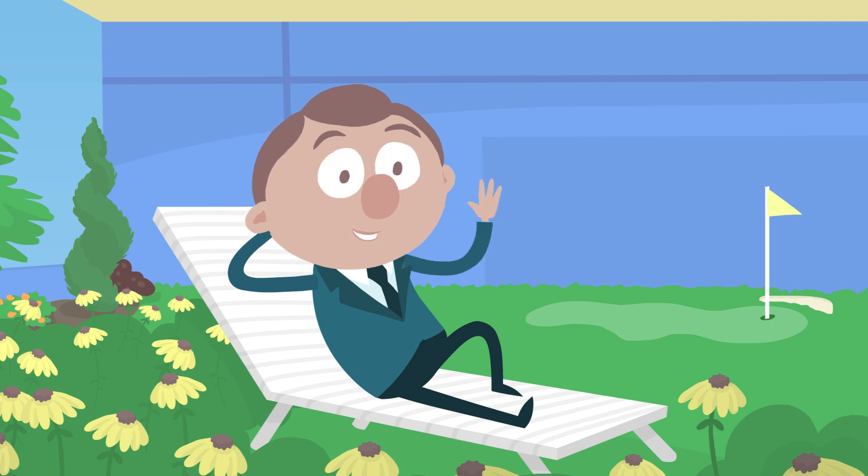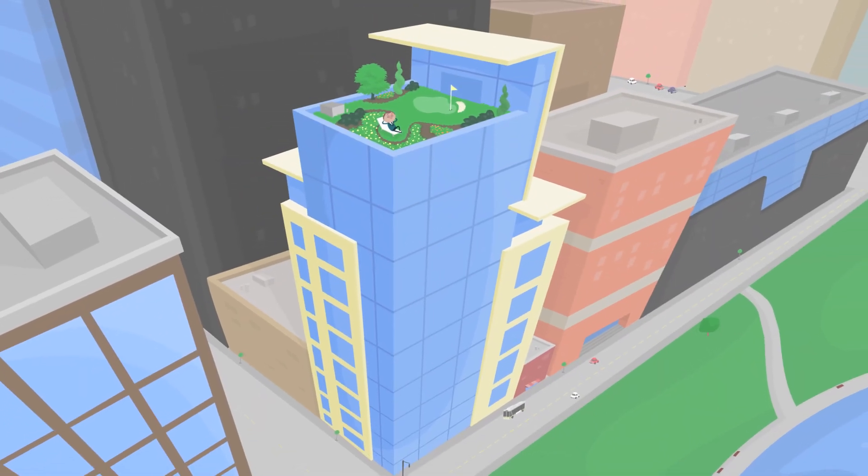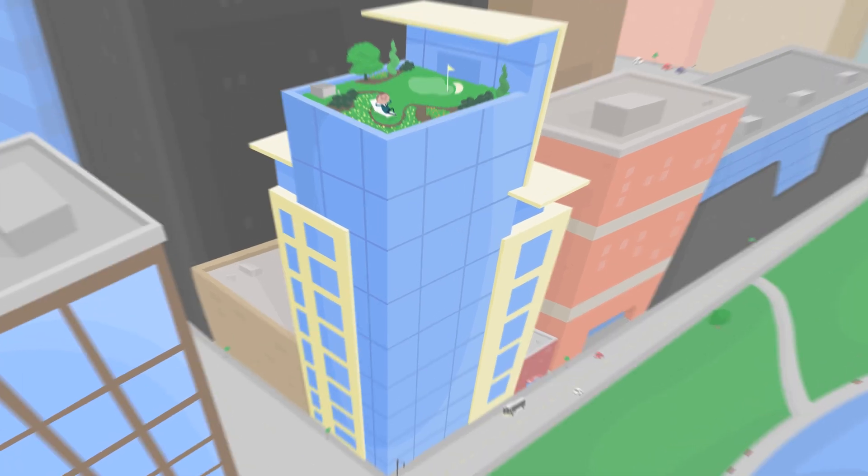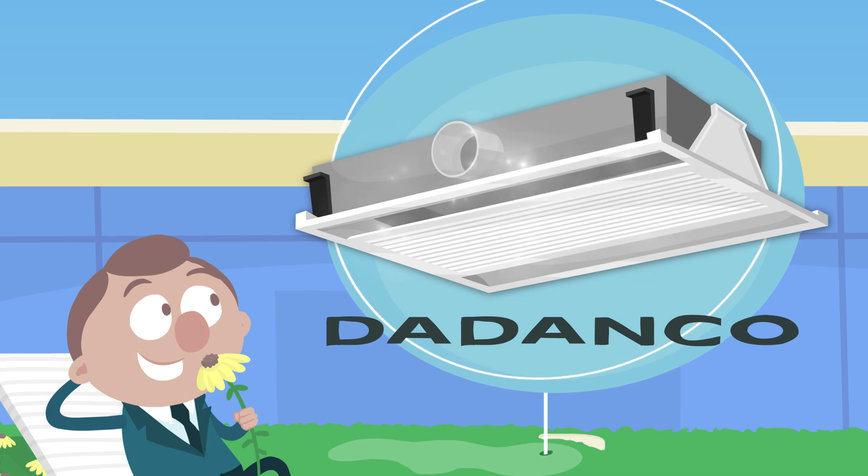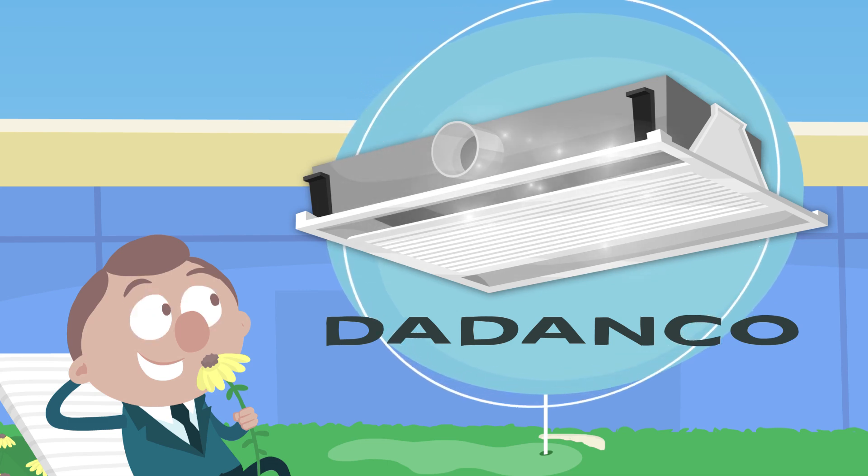Say hello to Albert. His gorgeous new office tower isn't just easy on the eyes, it's easy on the planet. That's because it's built with the greenest technologies, including a super-efficient active chilled beam solution from Dudenco.